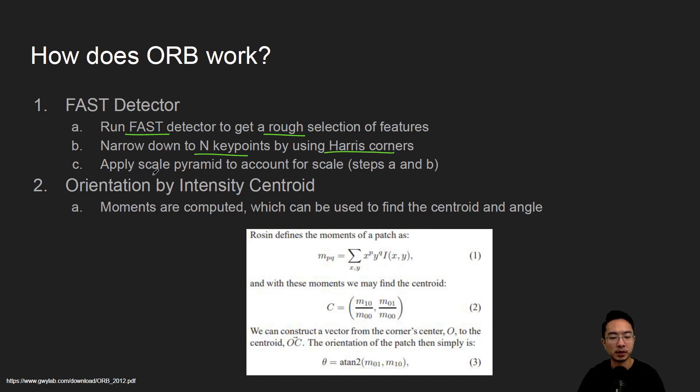And after that, you apply a scale pyramid to account for scale in steps A and B. And then you have orientation by intensity centroid.